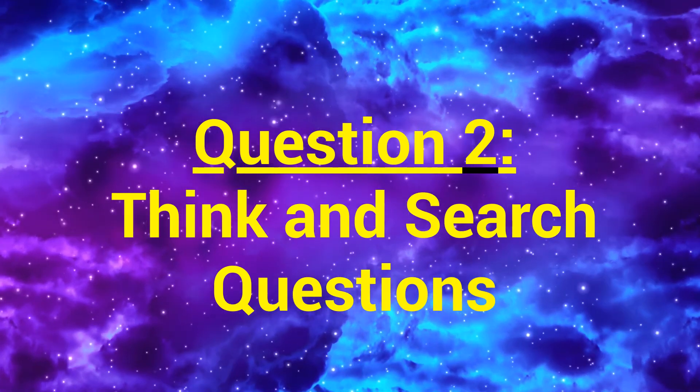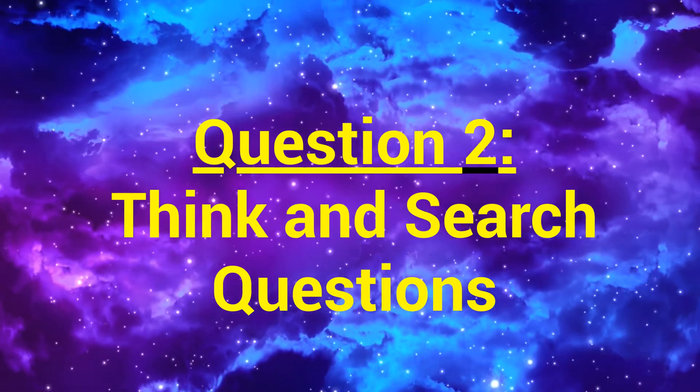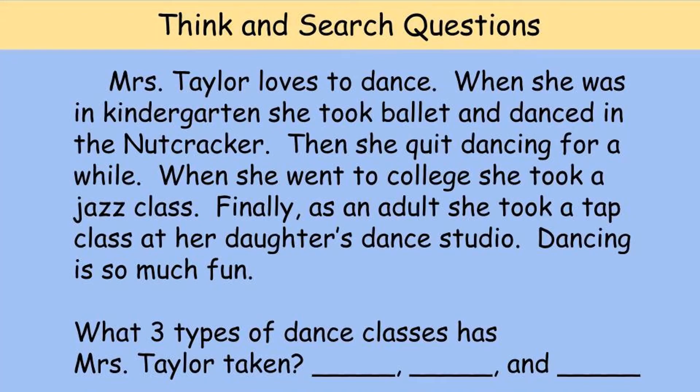The second type of question you may be asked is called the Think and Search question. The answers to these questions might not be as easy to find. In a Think and Search question, your answers are found in different parts of the story, so you have to gather up all of that information and put it together so you can have meaning. We don't just have one sentence — we have a collection of sentences that, when put together, forms a paragraph.